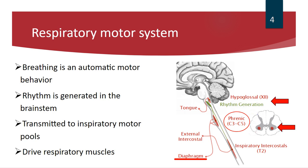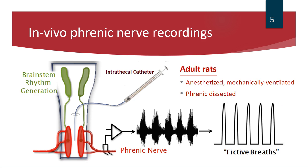Phrenic motor neurons are a column of motor neurons residing in the ventral horn of the upper cervical spinal cord between the third and fifth level — the same for rats and humans. The axons leave the spinal cord, come together to form the phrenic nerve, and the phrenic nerve innervates the diaphragm, which is our primary muscle of breathing. We take advantage of this network in an in vivo experimental preparation to record respiratory neural activity. In mostly young adult rats, the rats are anesthetized, mechanically ventilated, and vagotomized, and we use a dorsal approach to dissect out the phrenic nerve.